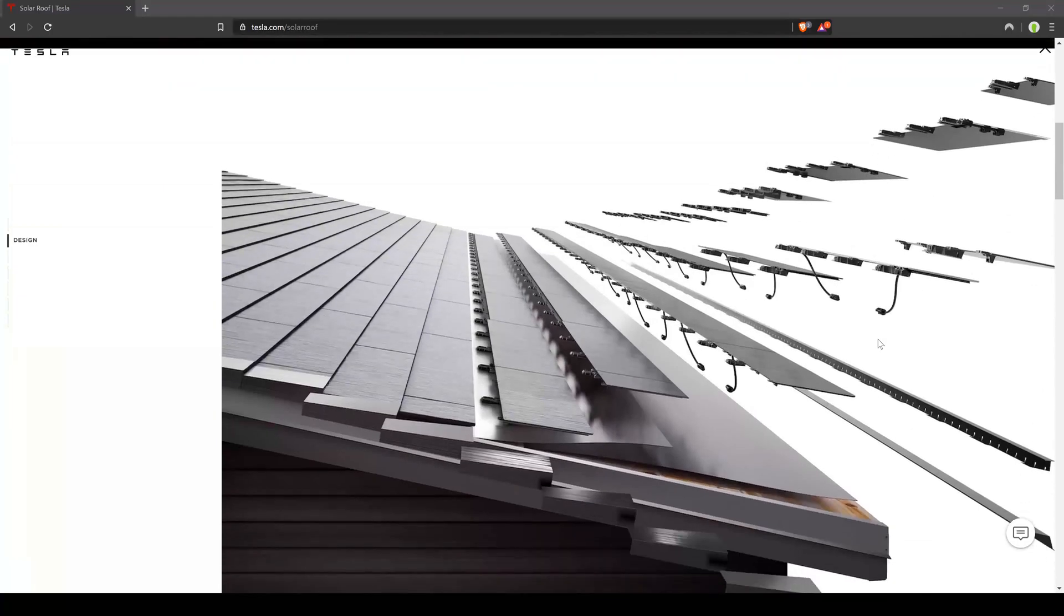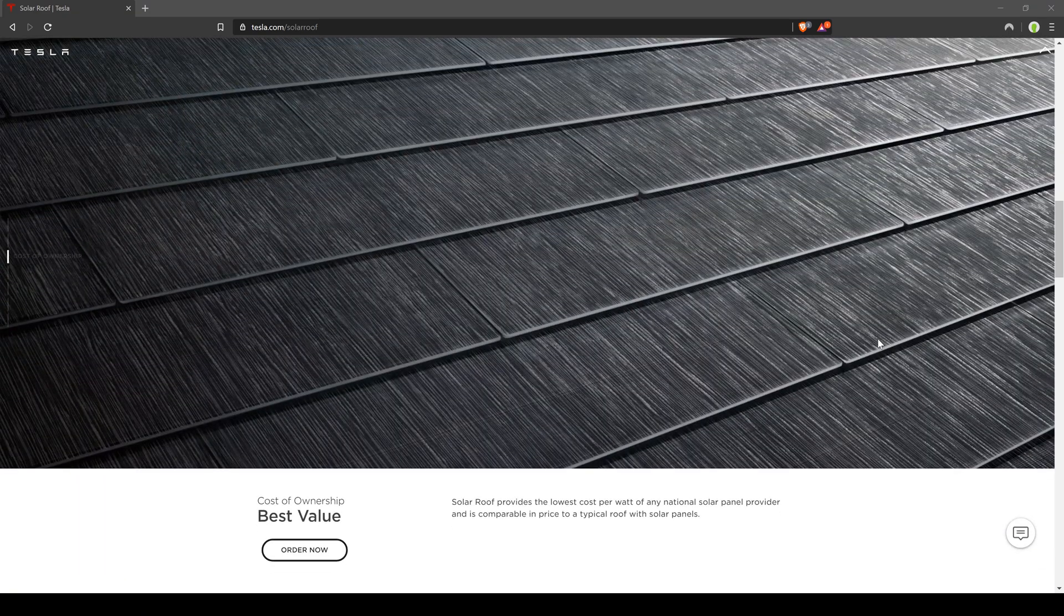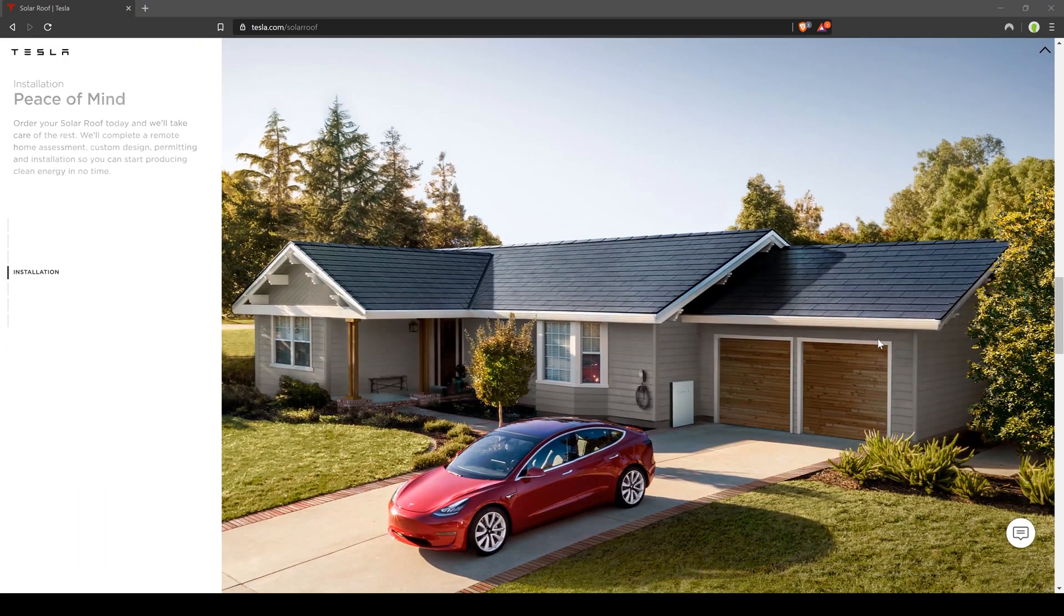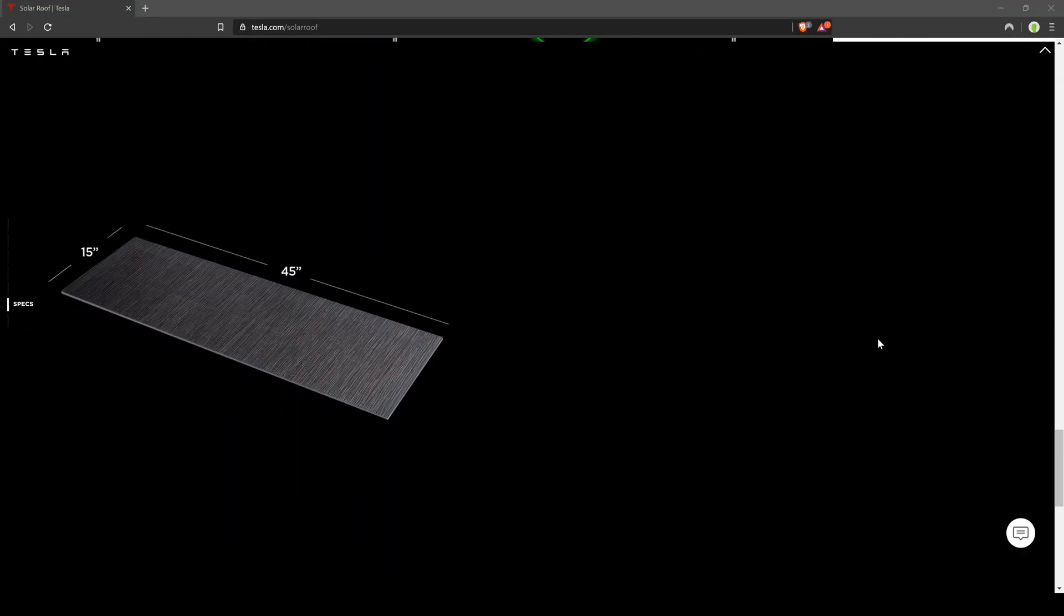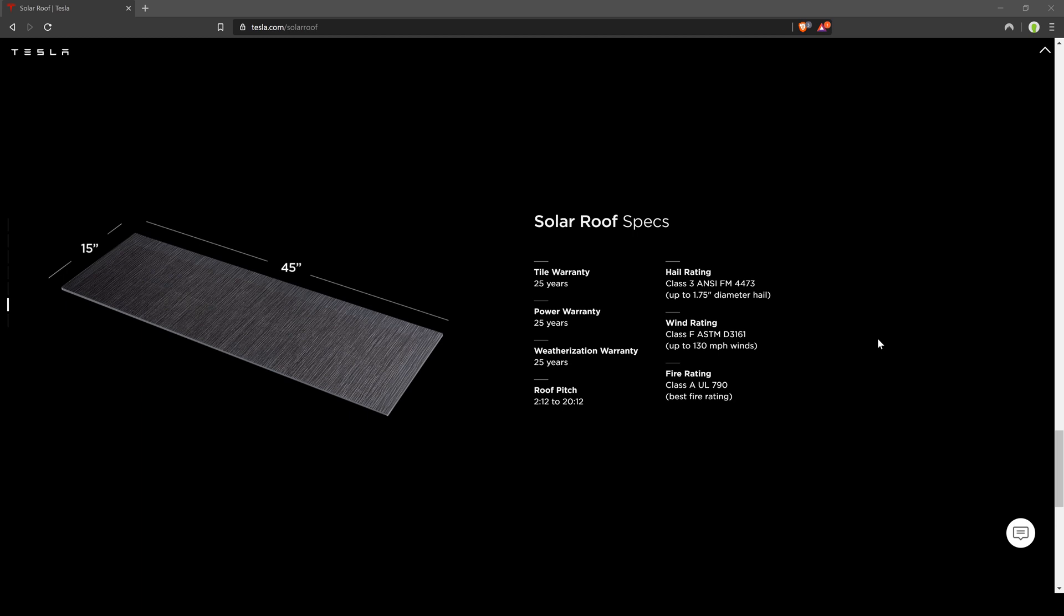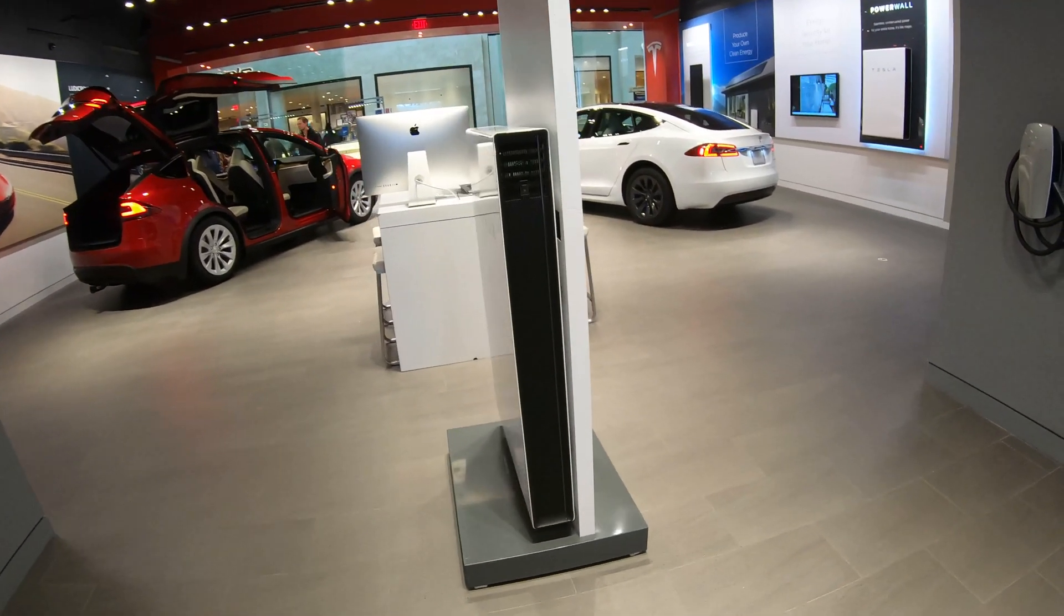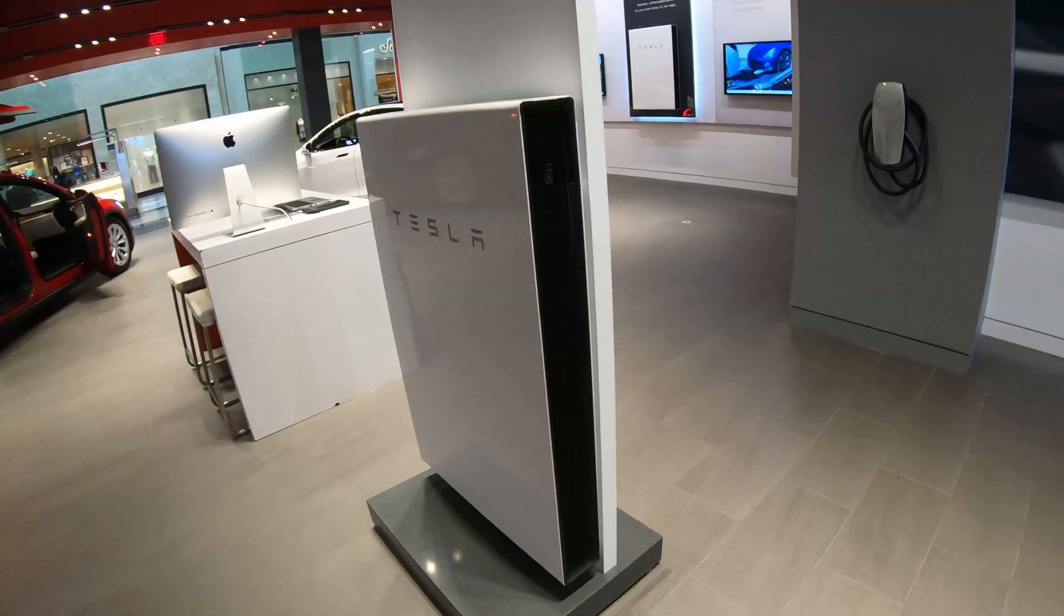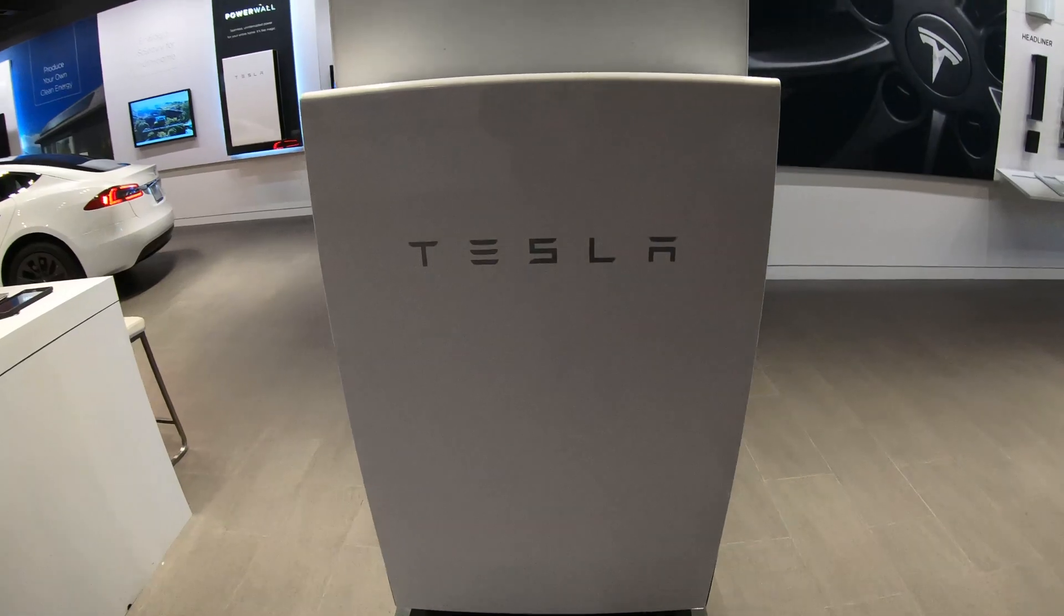Tesla calls their flagship approach the solar roof, which is both a roof and a solar system combined into an interconnecting series of roof tiles. While more expensive, the advantage of this approach is that it creates a very clean aesthetic. Both of these systems can be optionally augmented by Tesla's Powerwall, essentially a small version of their car battery pack that is used to store power for when there is no sun.